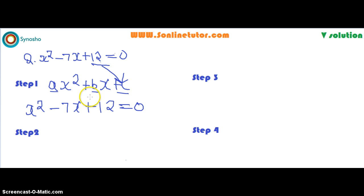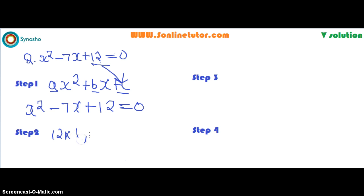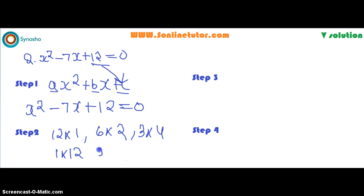The second step is to find out the factors of 12. What are the possible factors of 12? The possible factors are: 12 times 1, 6 times 2, and 3 times 4. You can also write the vice versa: 1 times 12, 2 times 6, and 4 times 3.